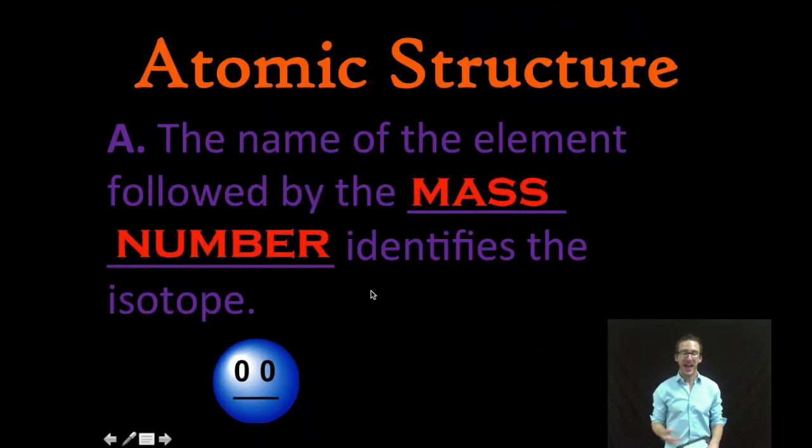Now because we have atoms of the same element but with different masses we need a way to differentiate between them and we name those isotopes simply by taking the name of the element and following it by the mass number that identifies that isotope.